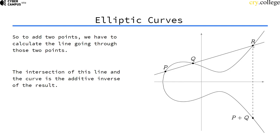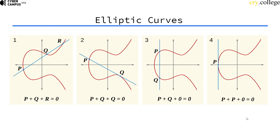And this line will intersect the curve at a third point. And if it does so, we just have to invert this point by inverting the y-coordinate. And then we have the result of this computation. So there are four overall cases that we need to consider. The standard case where the line goes through a third point and then we just mirror it and we have our results.